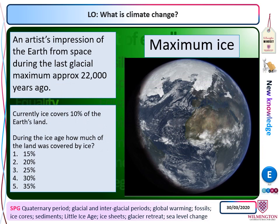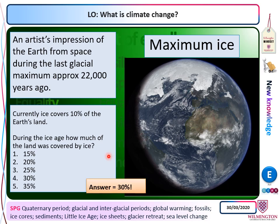This is an artist's impression of what the Earth looked like from space about 22,000 years ago, during the peak of the last glacial period. Glacial periods are ice ages — this is when there was maximum ice. About 30% of the land was covered by ice in the ice age — almost one third — whereas now it's 10%. So in ice ages you get three times more ice on the land than currently. The UK was here, and half of Great Britain was covered in ice, though the southern half where we live was not.